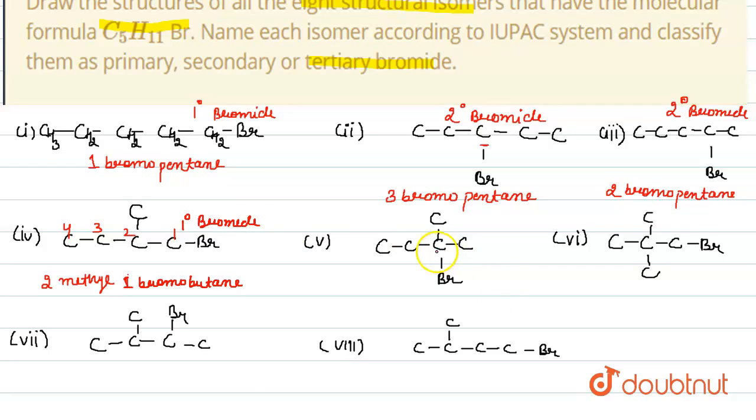Here this bromine is attached to the carbon which is further attached to three more carbons. That's why this is tertiary bromide, and its name will be 2-methyl-2-bromo-butane.